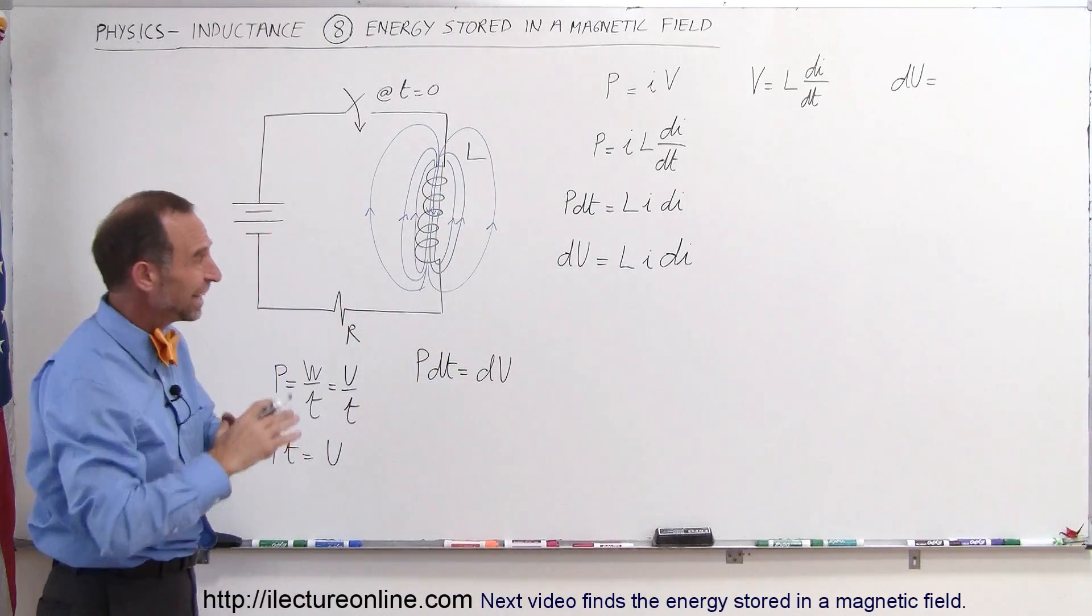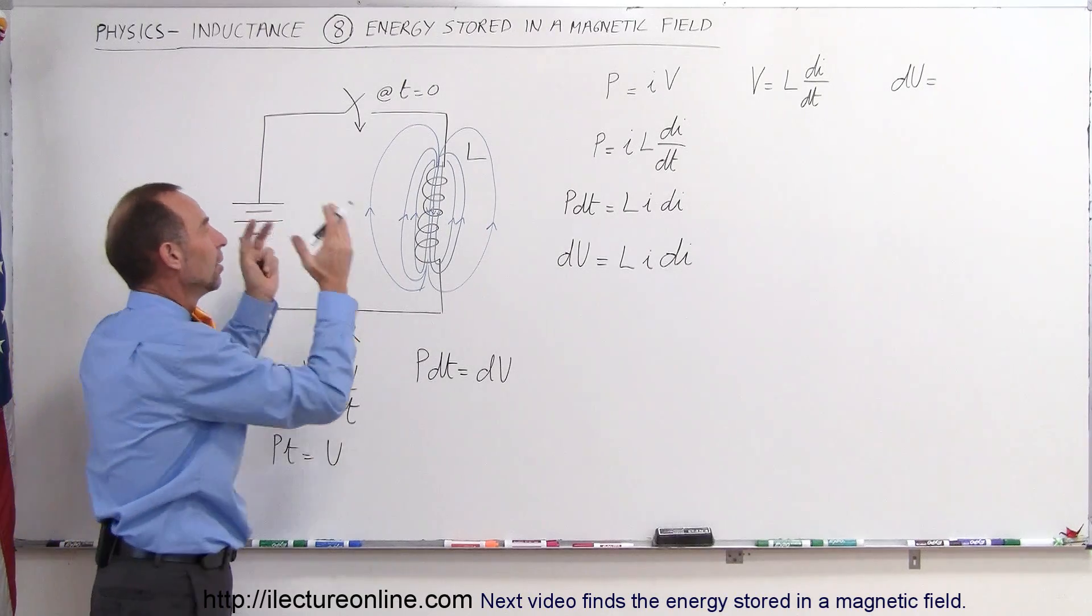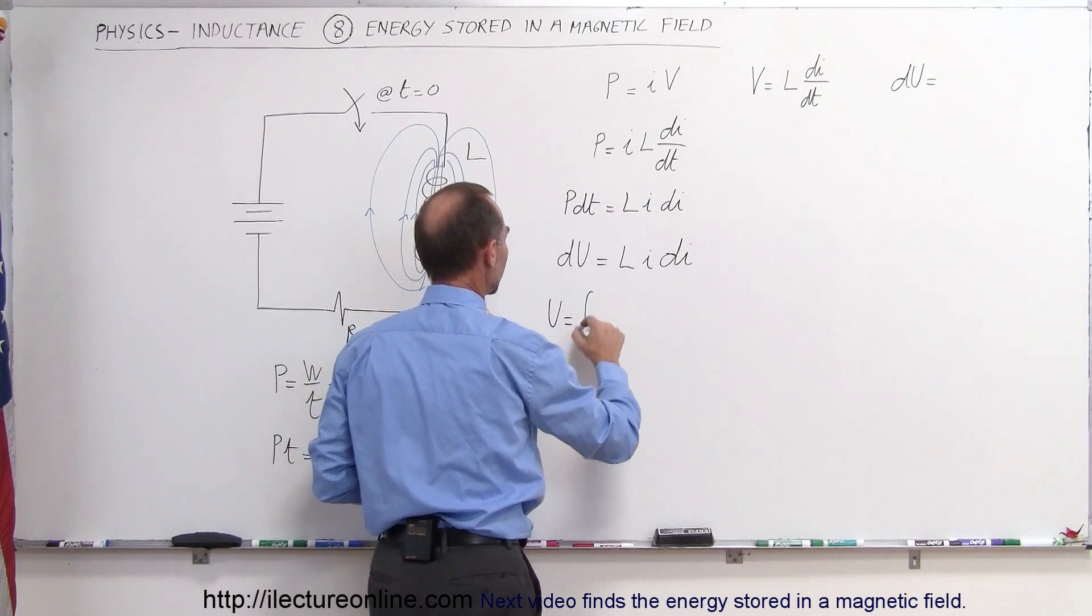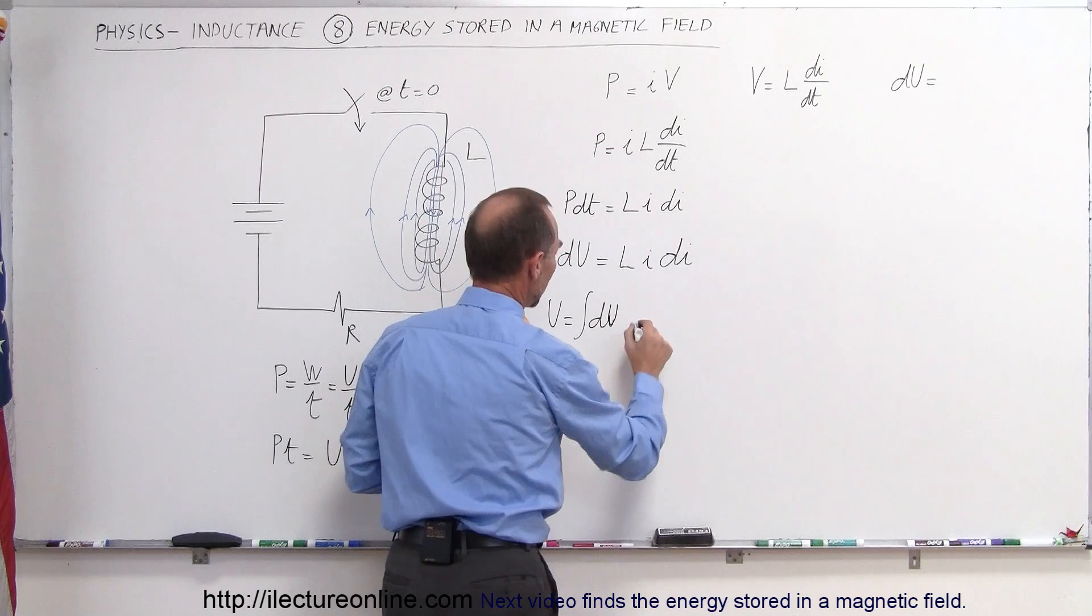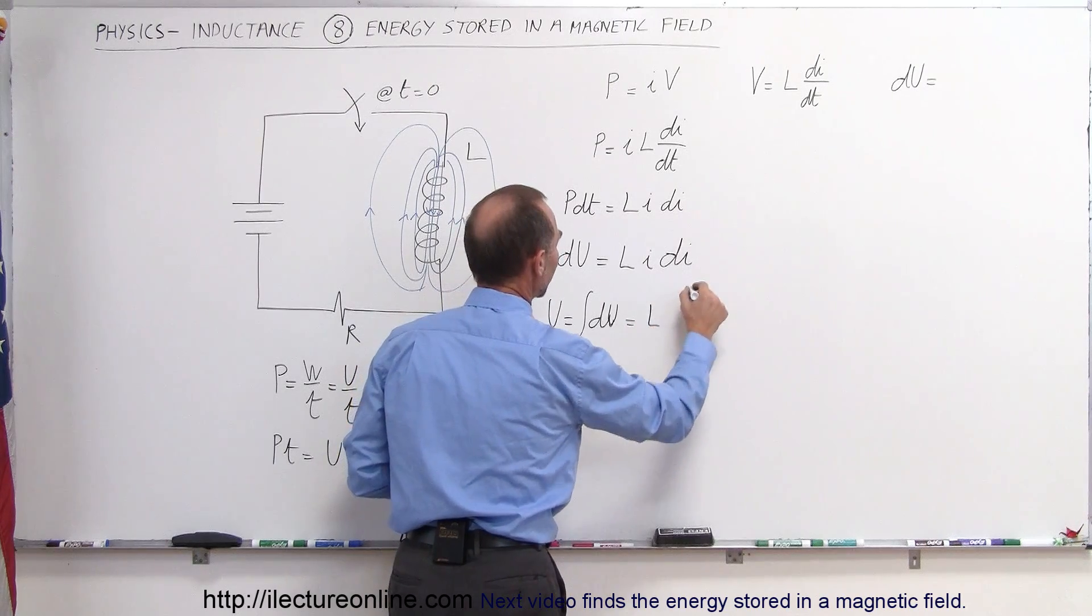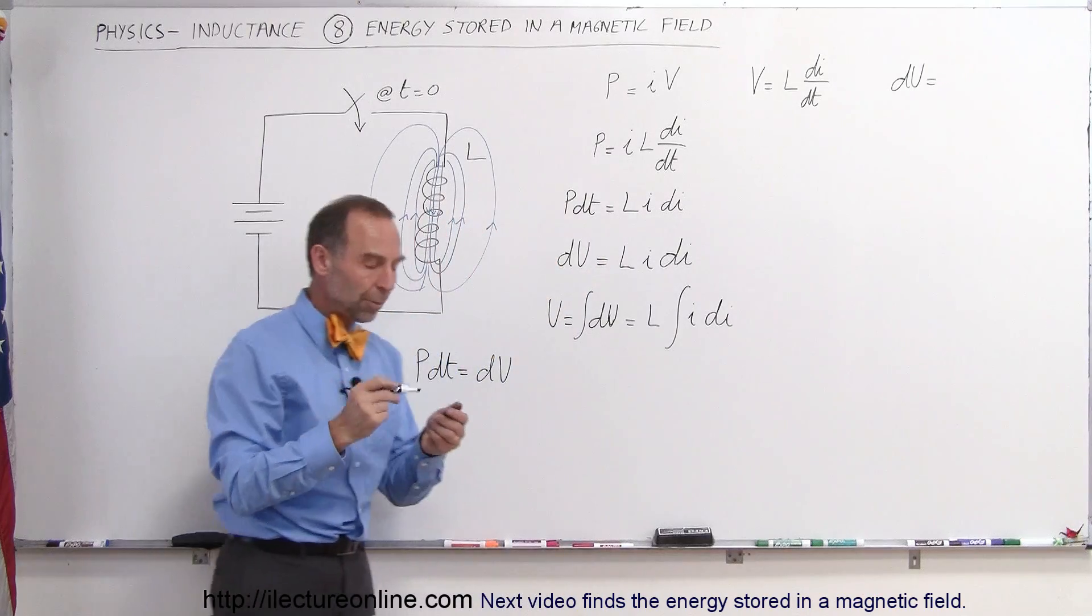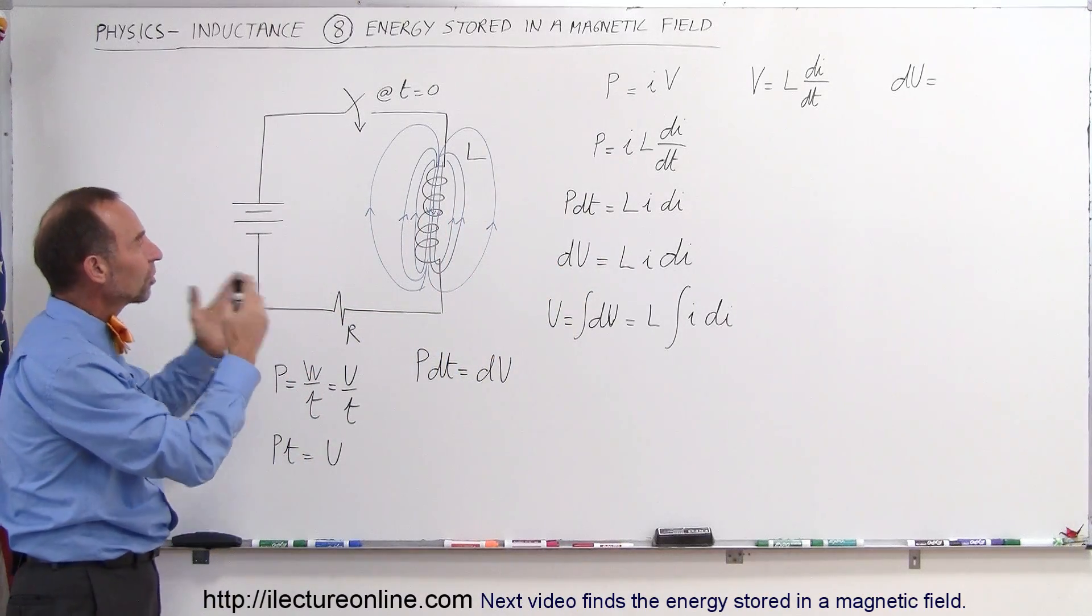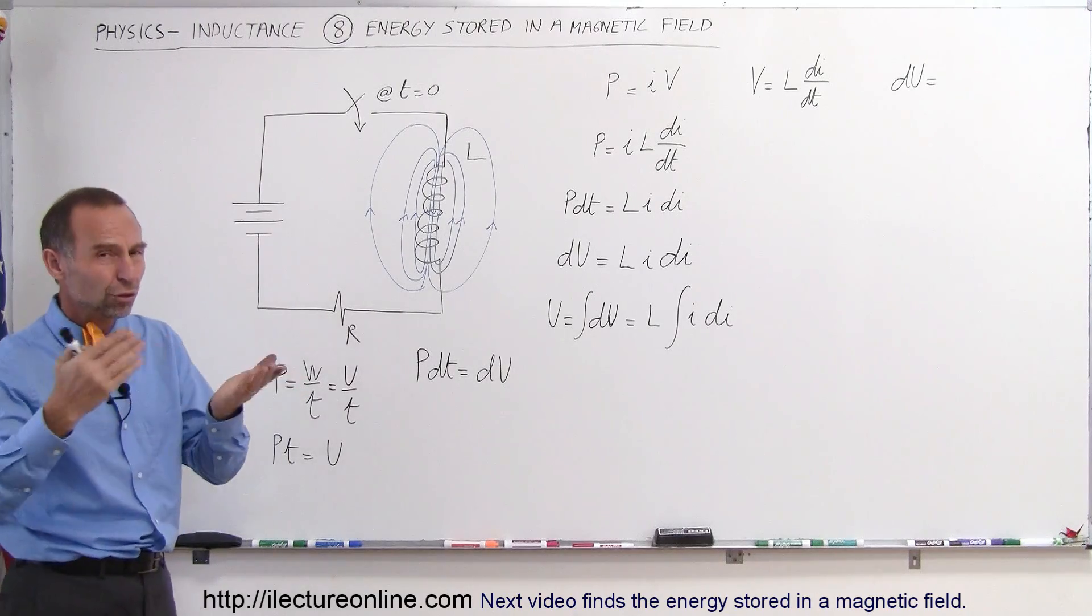And so what we're going to do now is integrate both sides of the equation because I want to see all the energy supplied to build up the magnetic field. So, therefore, U will be equal to the integral of all the dUs. dU, that's a capital U, which is equal to L times the integral of I times dI. Now, remember, the magnetic field will continue to grow as long as the solenoid is opposing a change in the current. So, for the entire duration when the current is changing,